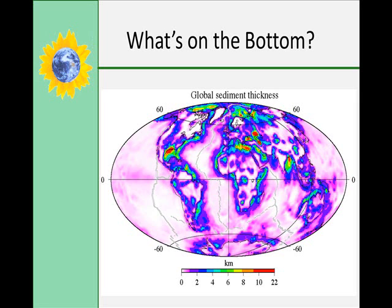Hydrogenous sediments consist of minerals that crystallize or precipitate directly out of ocean water through chemical reactions. These can include manganese nodules, which are found in deep sea beds near the hydrothermal vents, evaporites which are salts, calcium carbonates or limestone, and they usually accumulate very slowly.